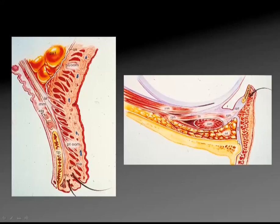Here's a cross-section of the lower lid depicting similar structures, with your inferior oblique muscle, your orbital fat, your orbital septum, and the lower lid retractors, which are the analog of the levator in the upper lid.